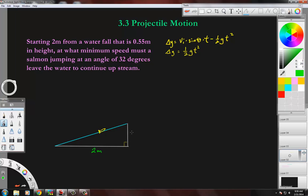And the waterfall is just a little bit bigger than half a meter. So it's 0.55 meters. And these fish have to jump up upstream to get to where they're going. This is 32 degree angle. And the question wants you to find the initial velocity of the fish.